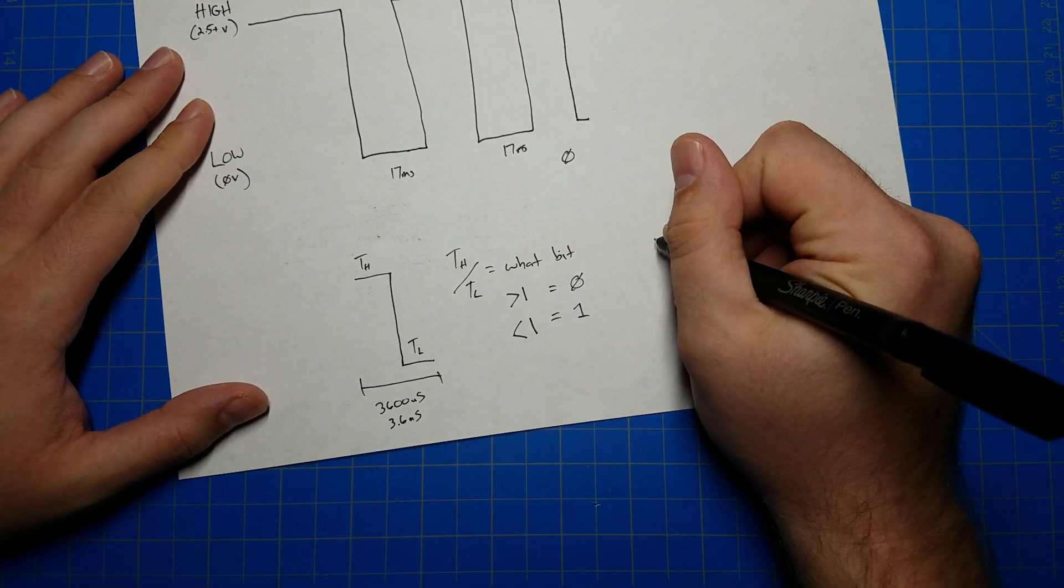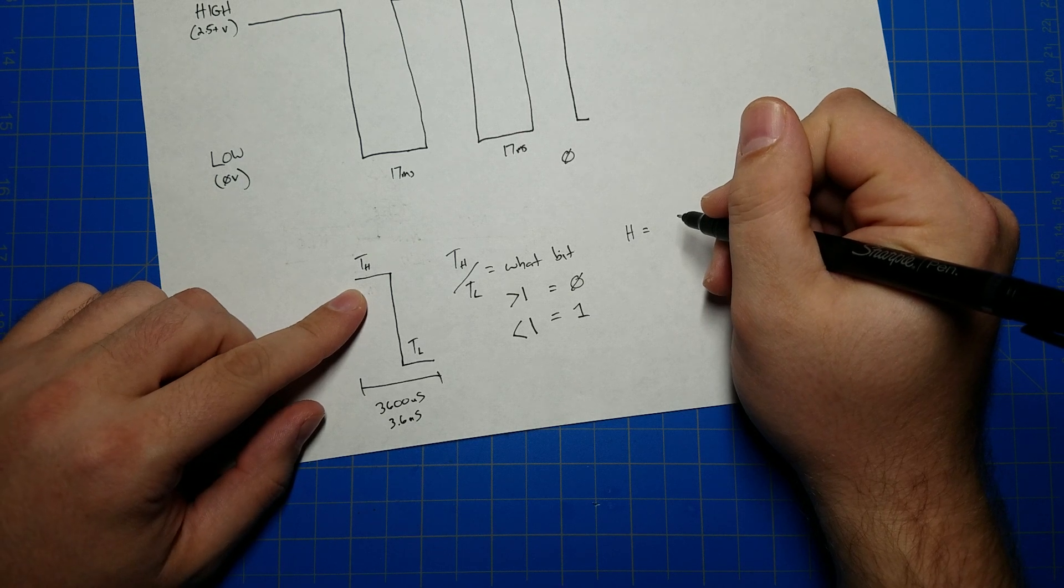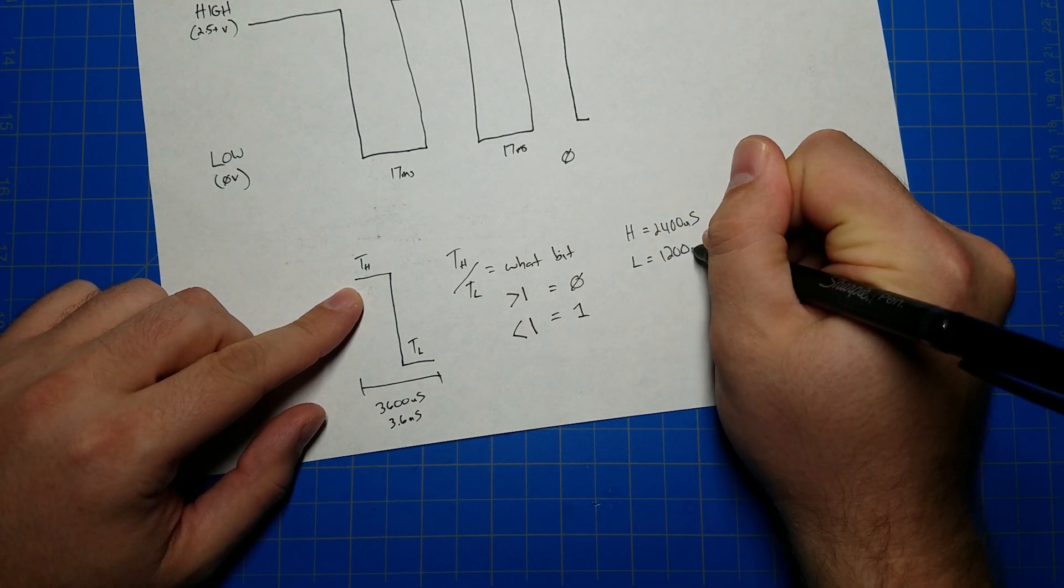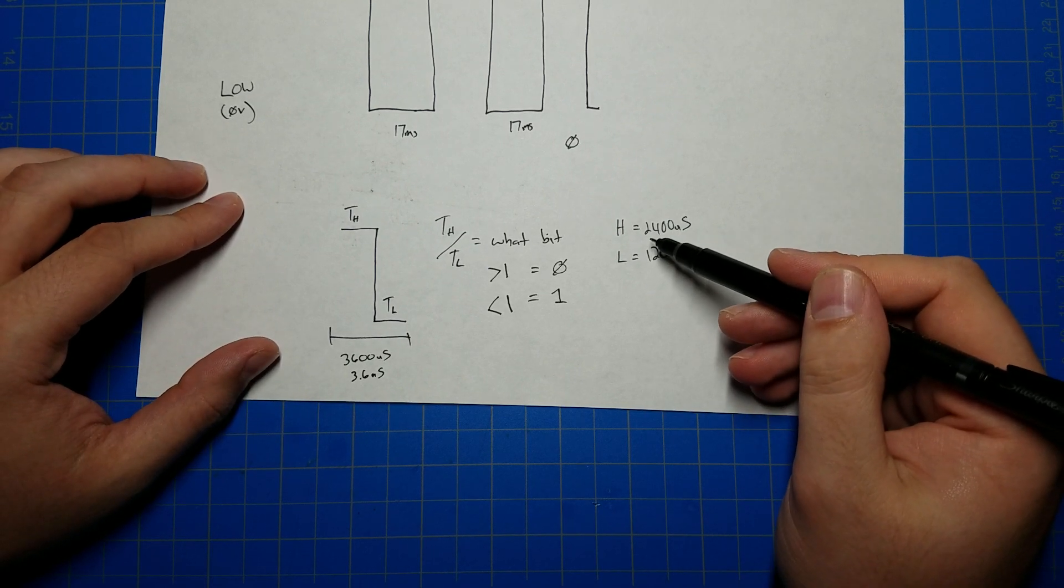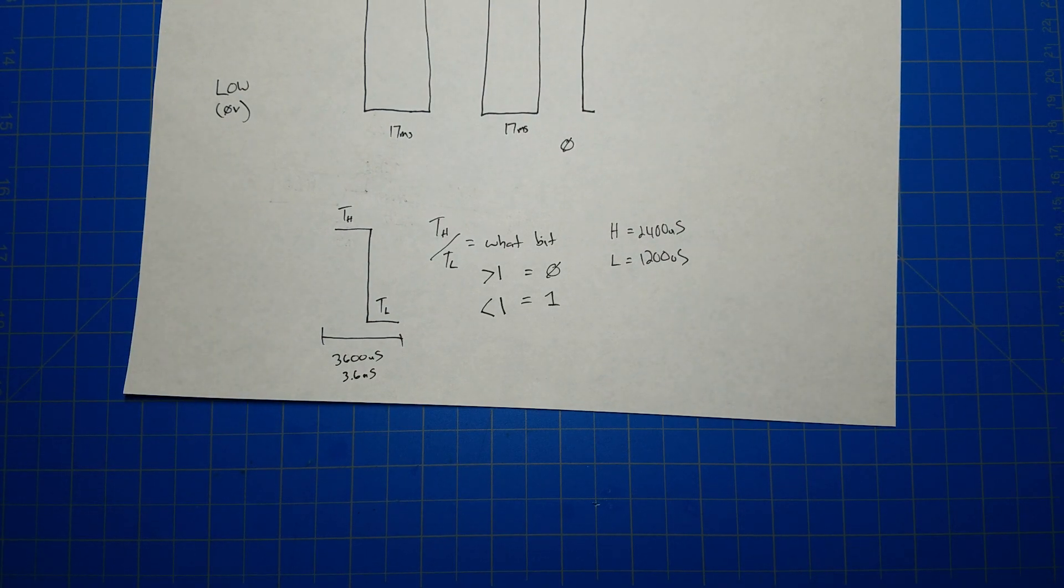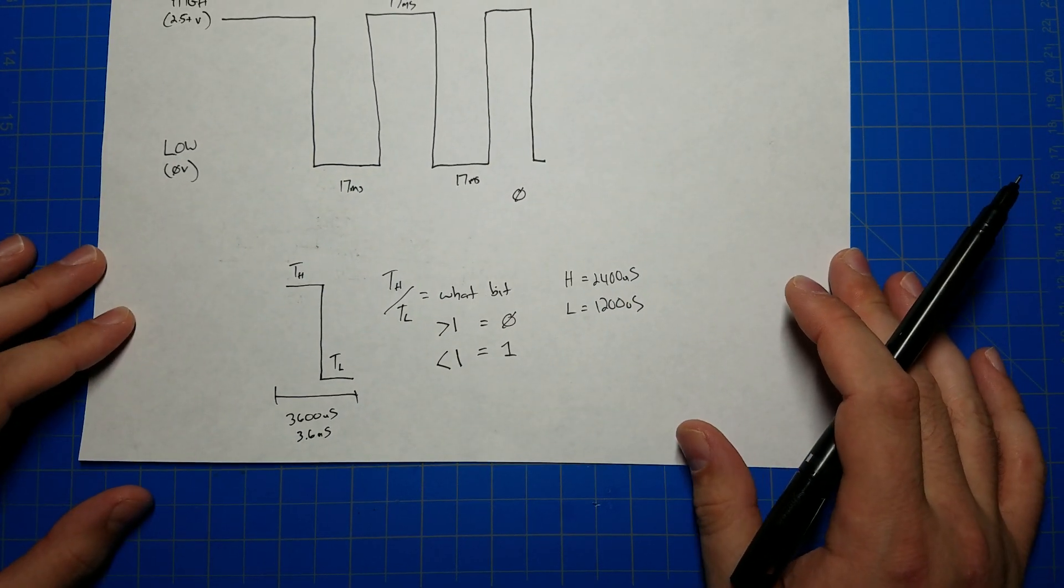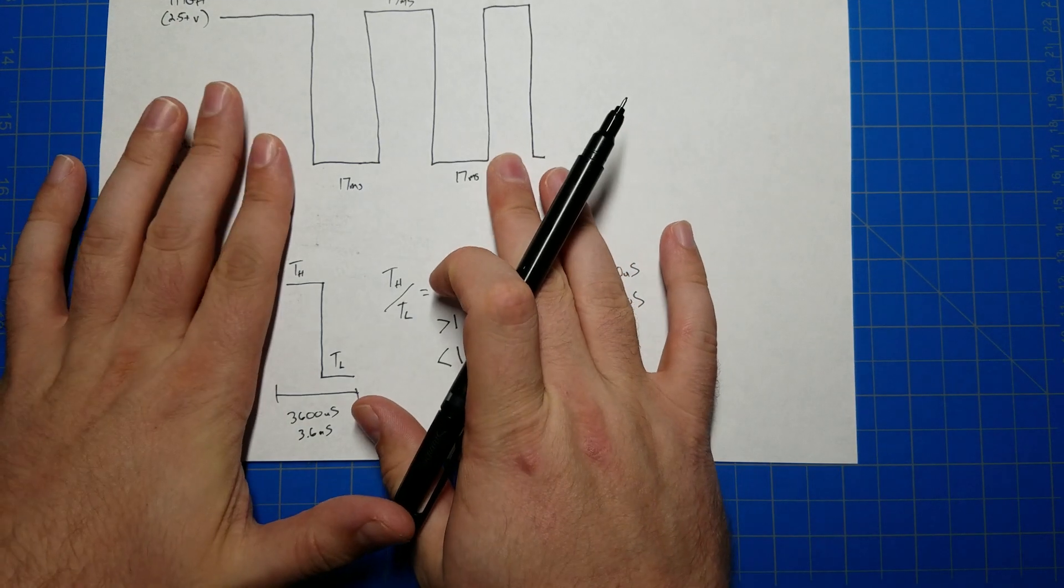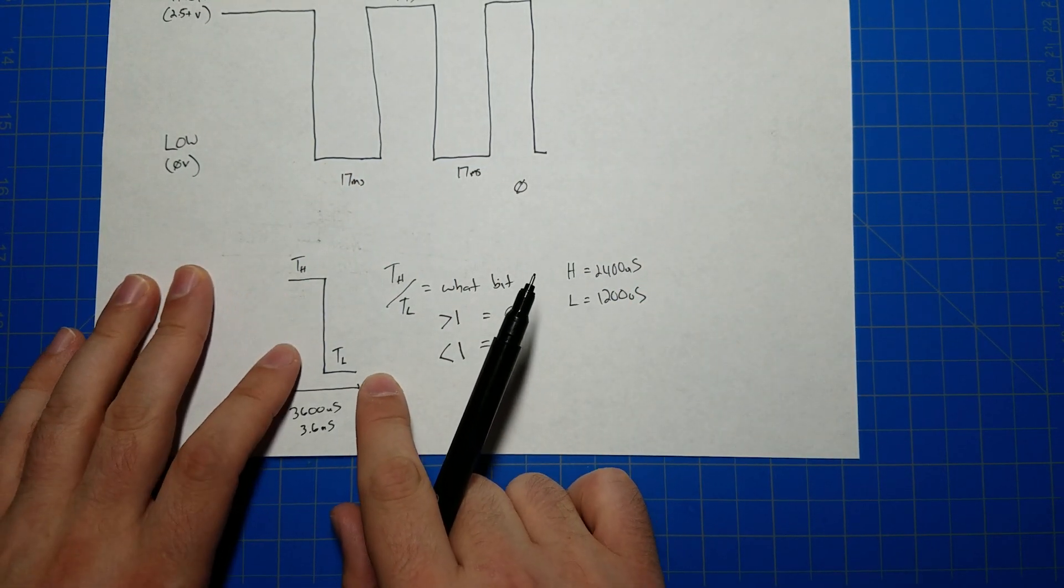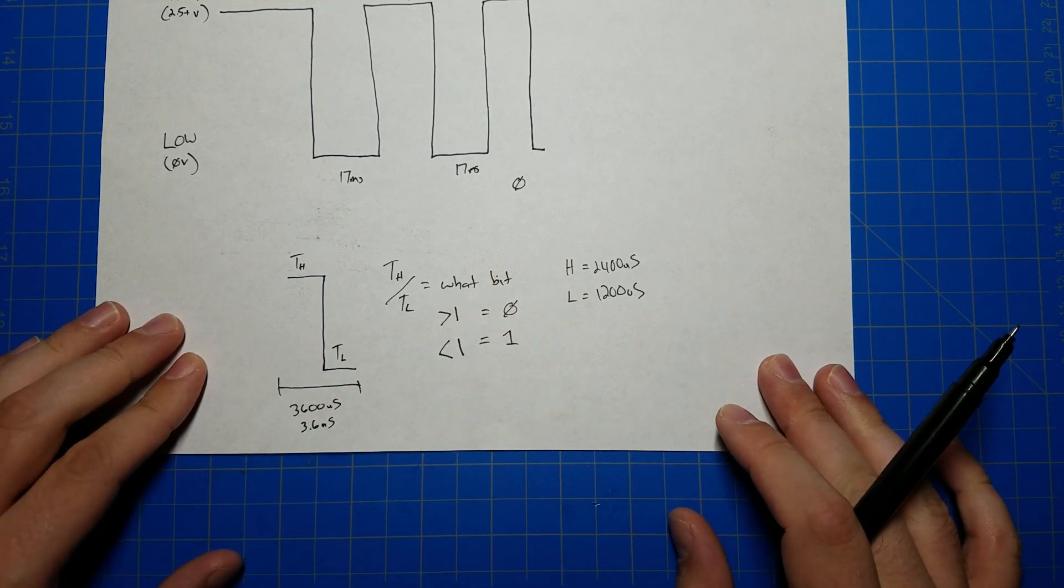So a zero would be when the high time has to be longer, so 2,400 microseconds. And the low time would be 1,200 microseconds. And these don't have to be exact. I've gone down to, I think, 1,500 and 1,000 or something like that in microseconds and it still worked. But there is a limit. It will eventually be switching too fast and the blade won't be able to detect the commands anymore. So your preamble followed by eight bits, each bit takes on the form of a high period and a low period. And the timing of the high period compared to the timing of the low period tells you what bit it is, a one or a zero.